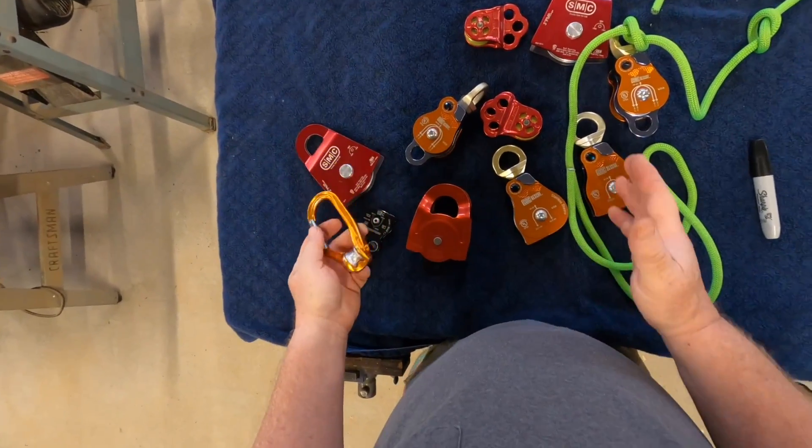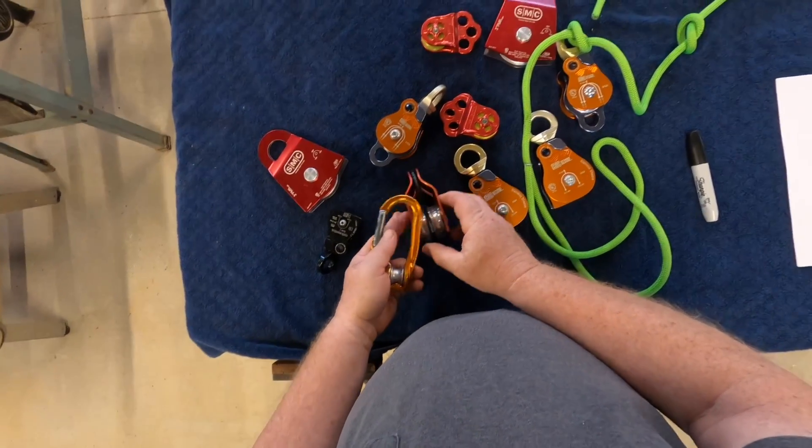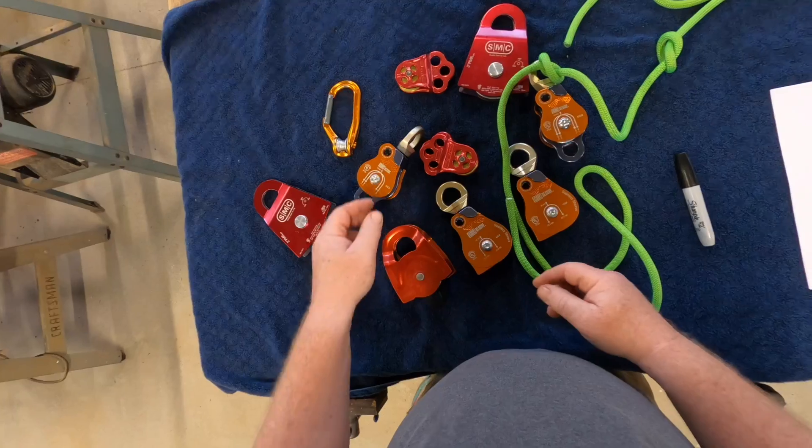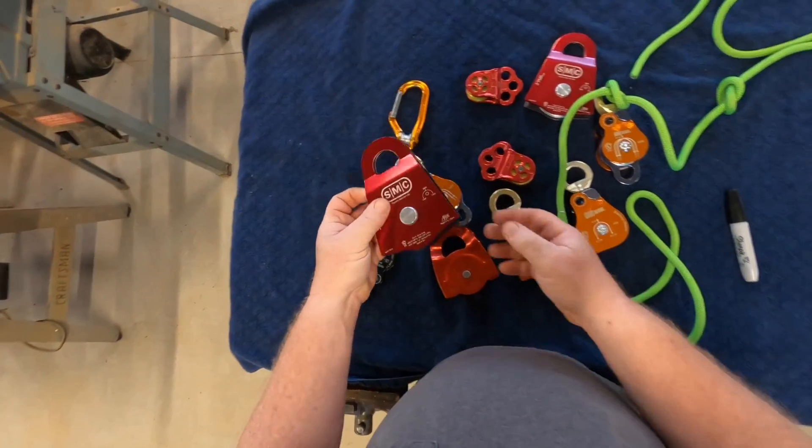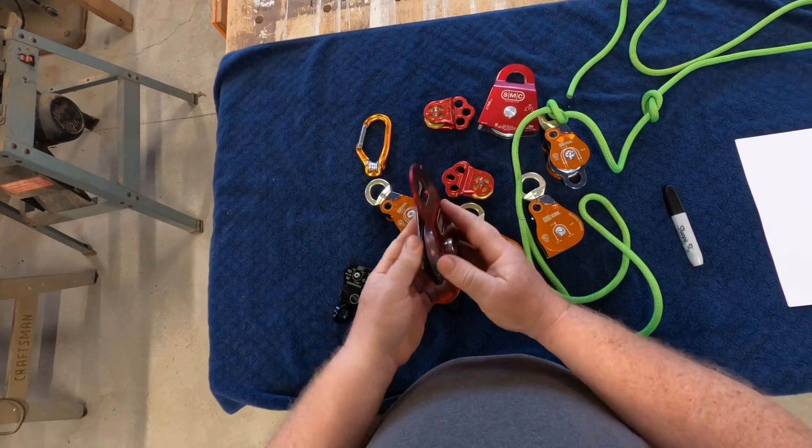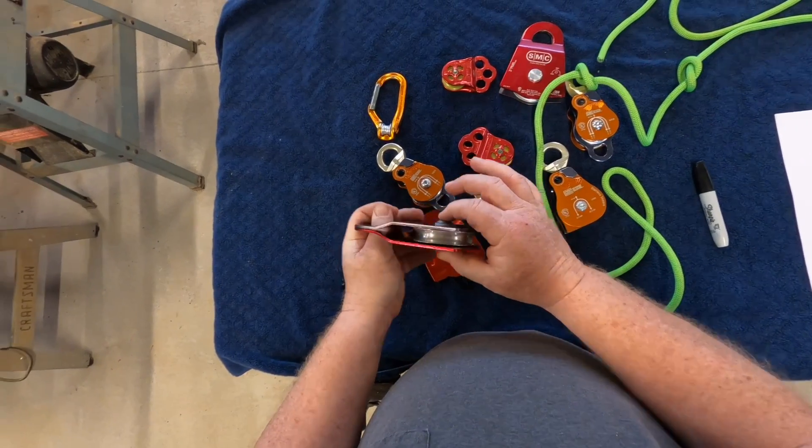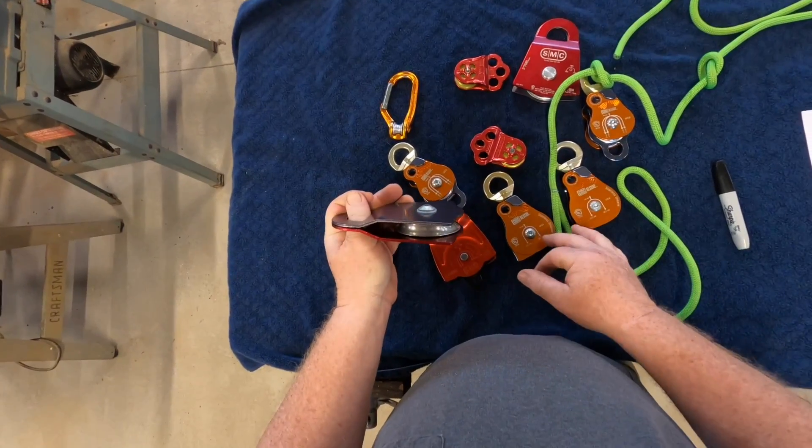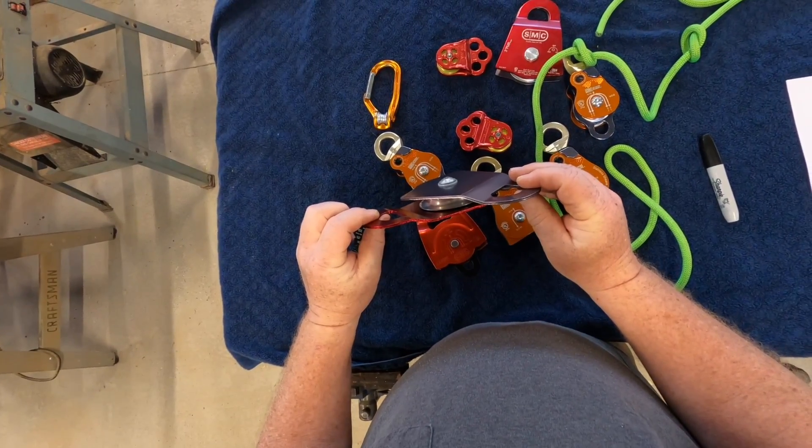So we need to consider what style we need. We need to consider what size we need. Let's go over some of the parts of this. Pulleys are a very simple machine. This one here, you have two side plates that swivel. You have an axle. And then of course you have the pulley wheel, or the sheave. That's pretty much it on a pulley.